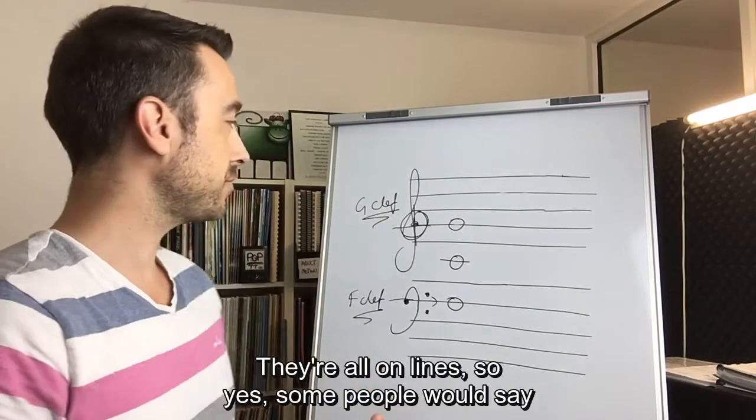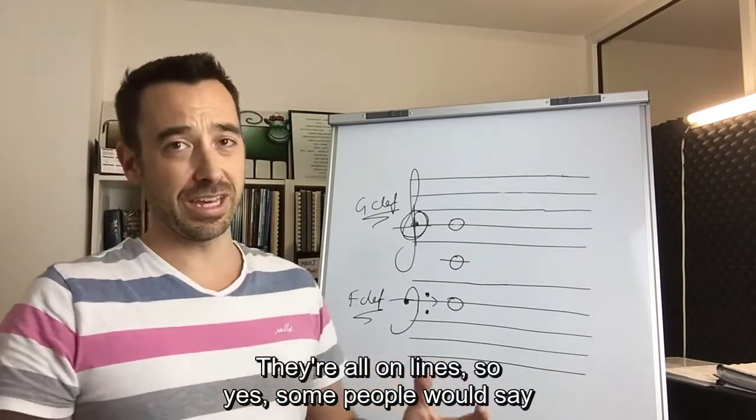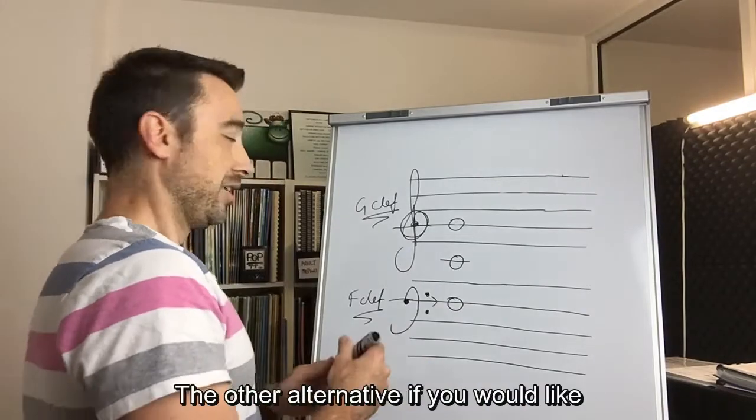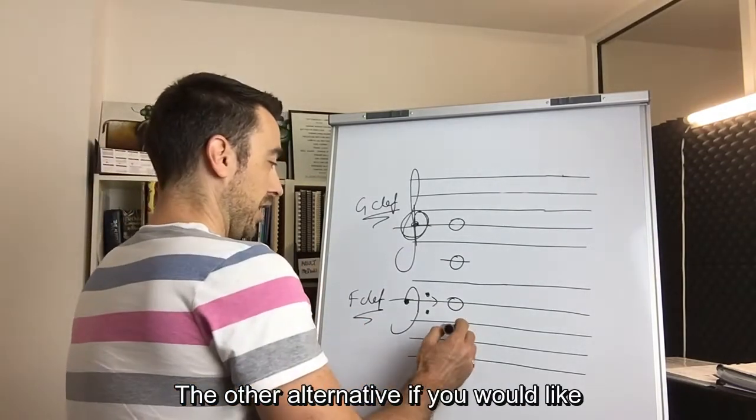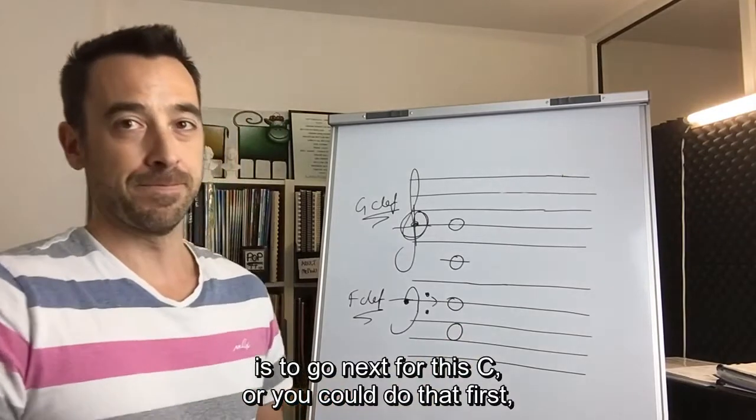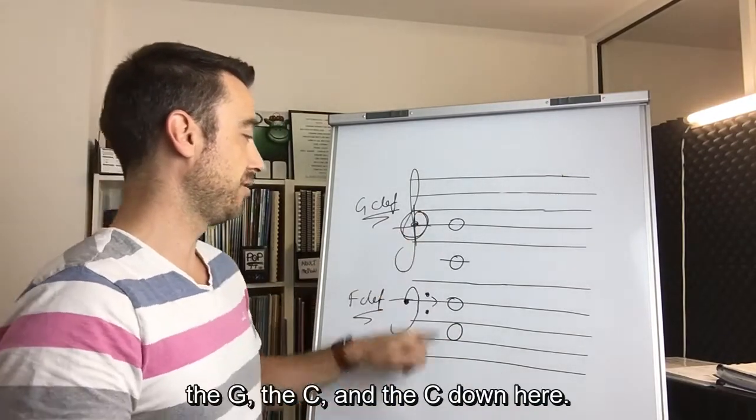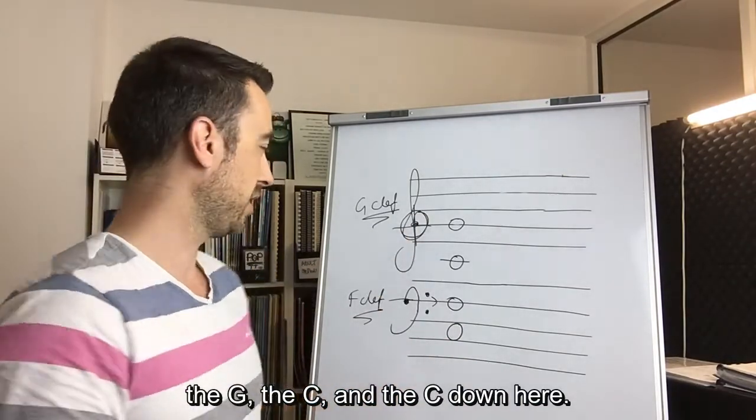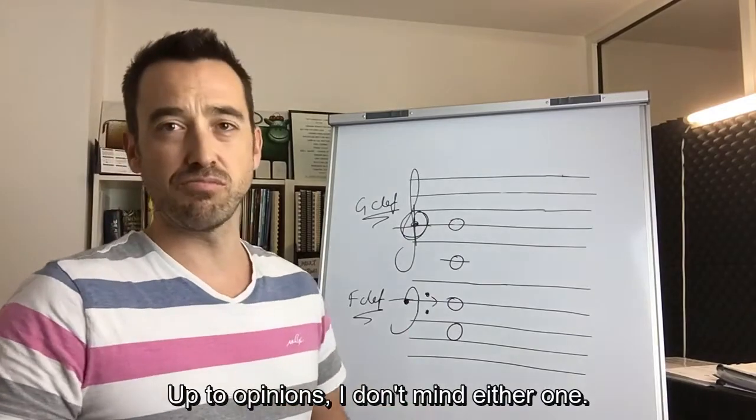They're all in lines. So yes, some people would say that could be a little bit confusing. The other alternative, if you would like, is to go next for this C, or you could do that first—the G, the C, and the C down here. I have two opinions. I don't mind either one.